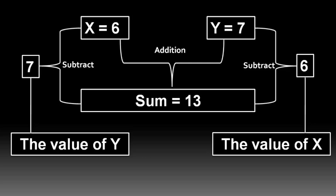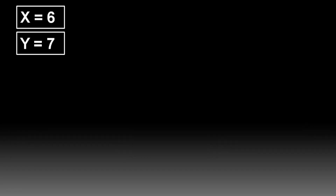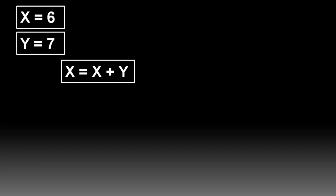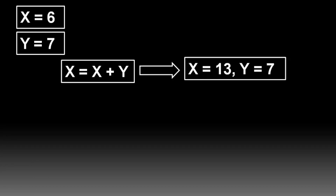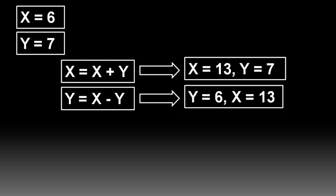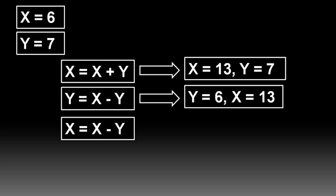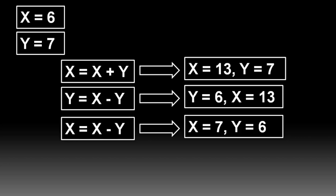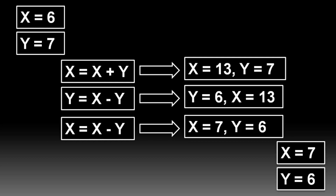Let me make this clearer. We have X equals 6 and Y equals 7. We add X and Y and store the value in X — this gives X equals 13 and Y equals 7. Next, we subtract the new value of X from Y and store the result in Y — this gives Y equals 6 and X equals 13. Finally, we subtract X and Y and store the value in X — this gives X equals 7 and Y equals 6. So we have successfully interchanged the values of X and Y.